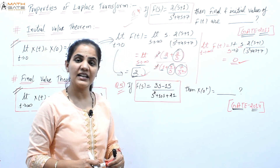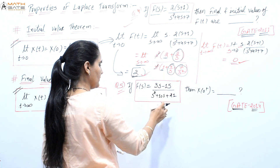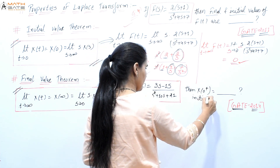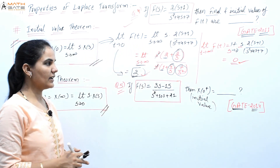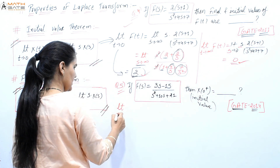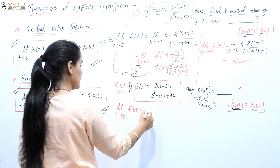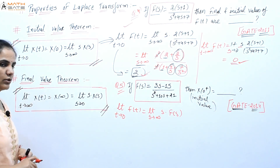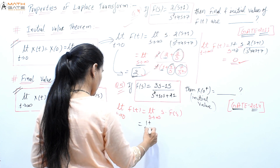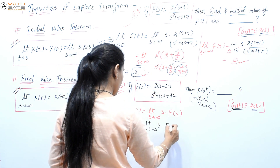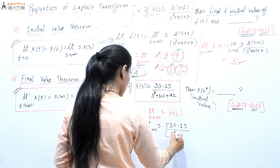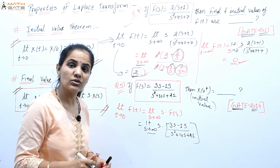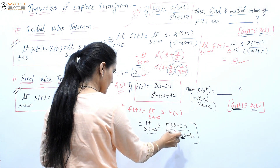Next question, also from GATE 2011/2014: F(s) = (3s−15)/(s²+10s+21). We need to find initial and final values. Applying the initial value theorem: limit s→∞ of s·F(s) = limit s→∞ of s·(3s−15)/(s²+10s+21). We factor out s from the numerator and s² from the denominator to create 1/s terms.